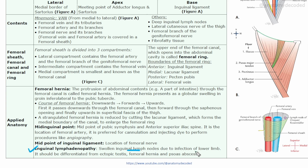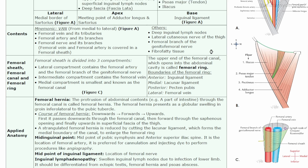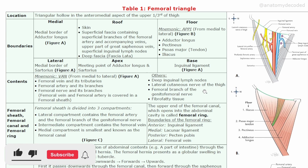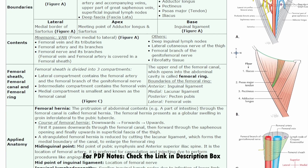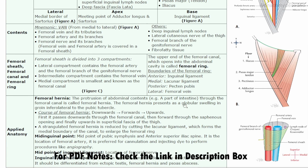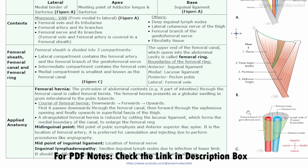Inguinal lymphadenopathy refers to swelling of the inguinal lymph nodes due to infection of the lower limb. It should be differentiated from ectopic testis, femoral hernia, or psoas abscess, which can also cause swelling in this region. This covers all the important points of the femoral triangle — boundaries, contents, and applied anatomy.